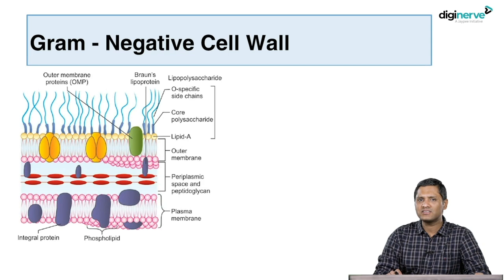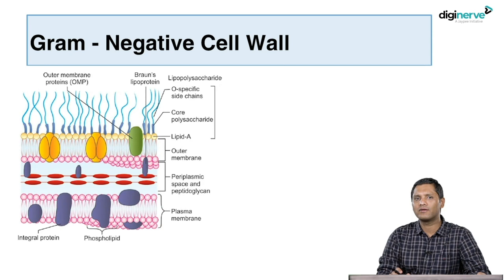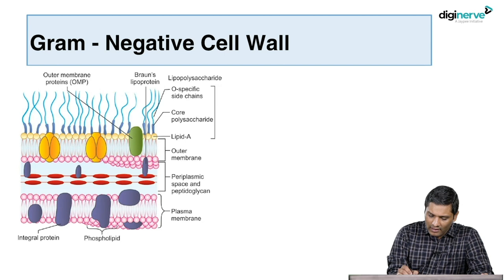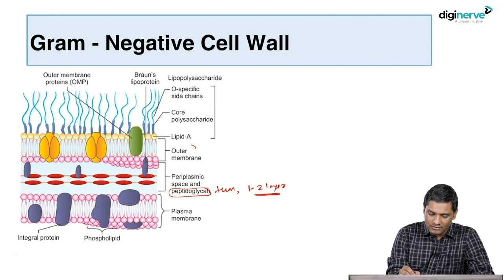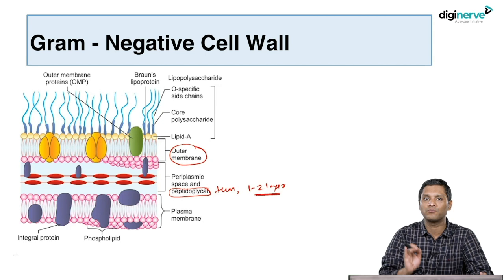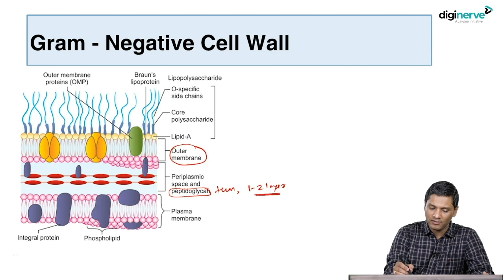Now let us discuss the gram-negative cell wall, which is a little different from gram-positive. The first difference is the peptidoglycan layer is very thin — only one to two layers thick. It is usually present in the periplasmic space. Next to the peptidoglycan layer, it has an outer membrane, which is not present in gram-positive cell wall. External to the outer membrane, there is another layer called lipopolysaccharide.